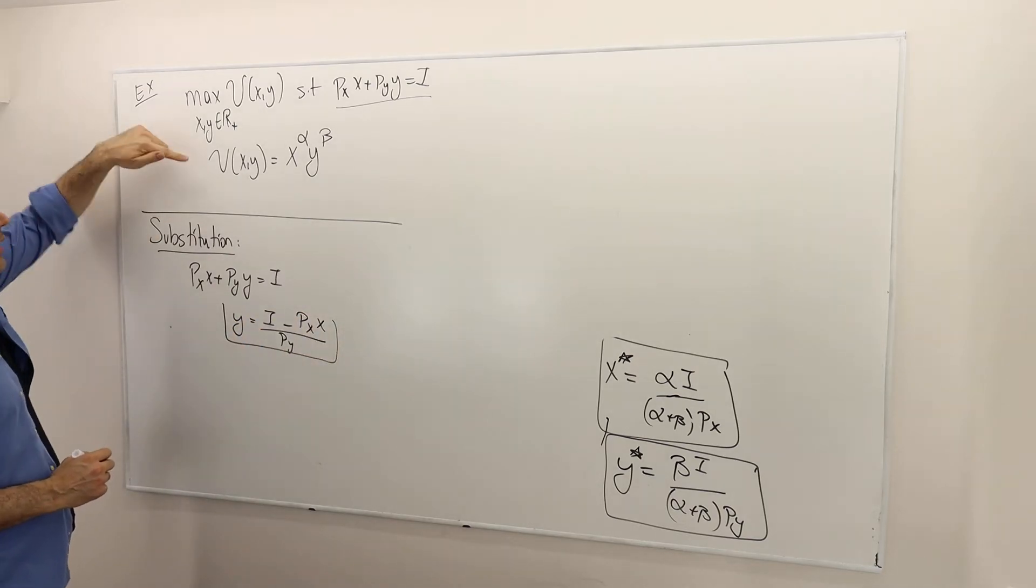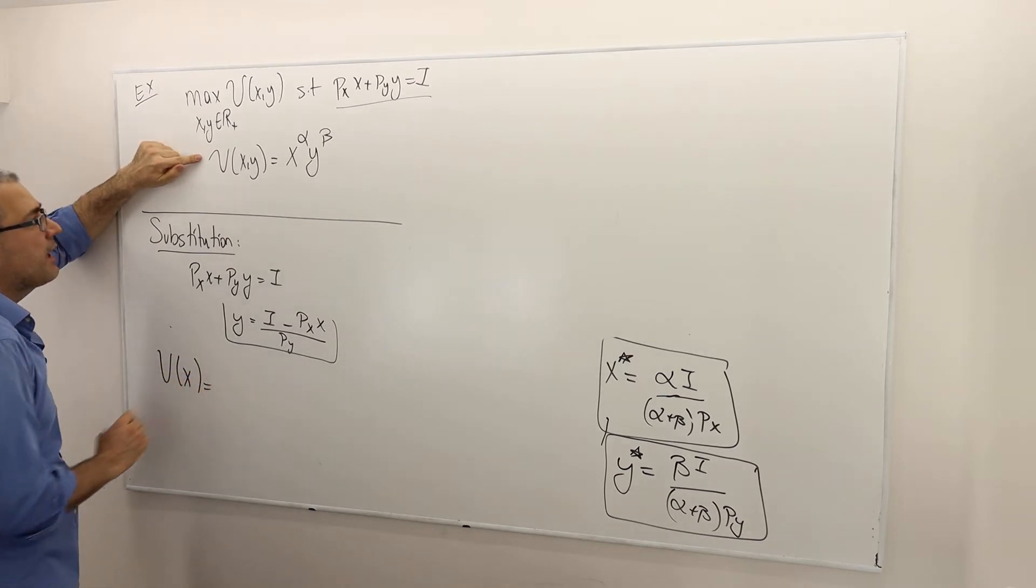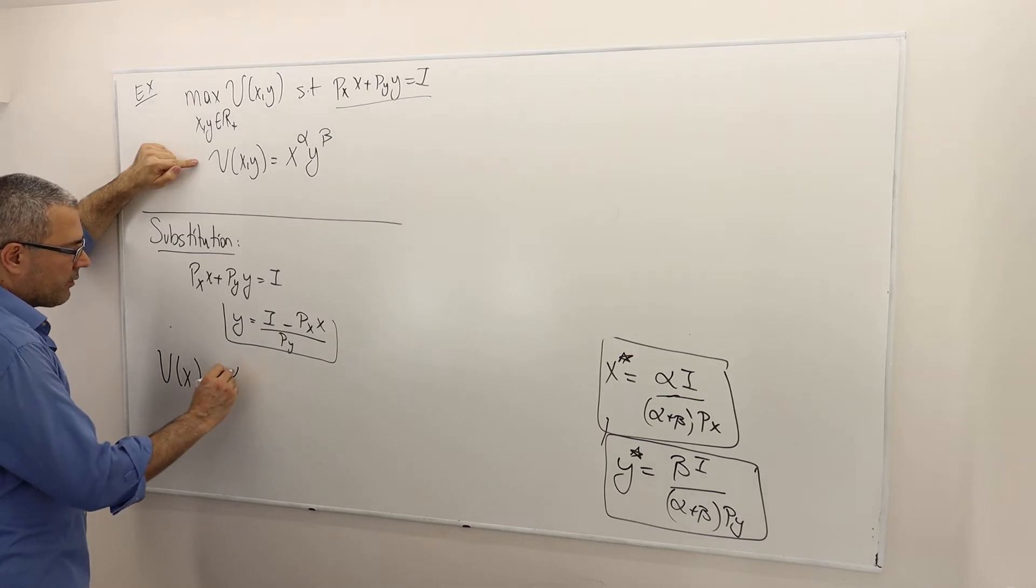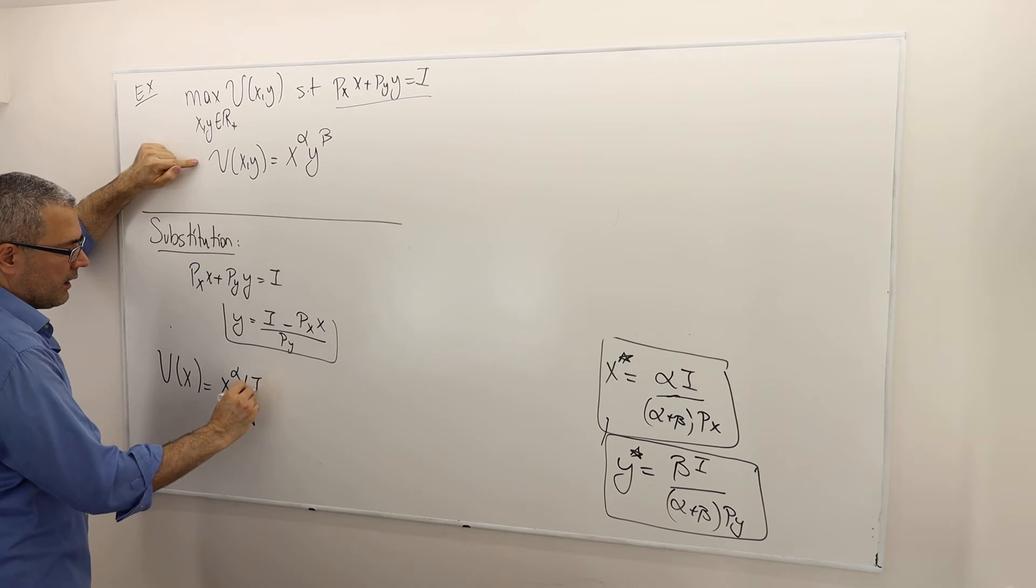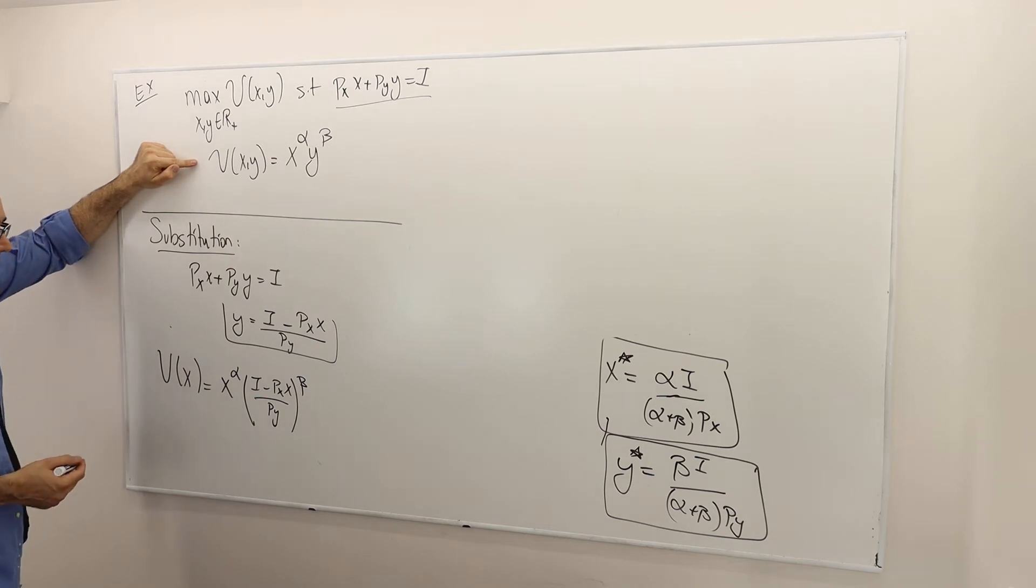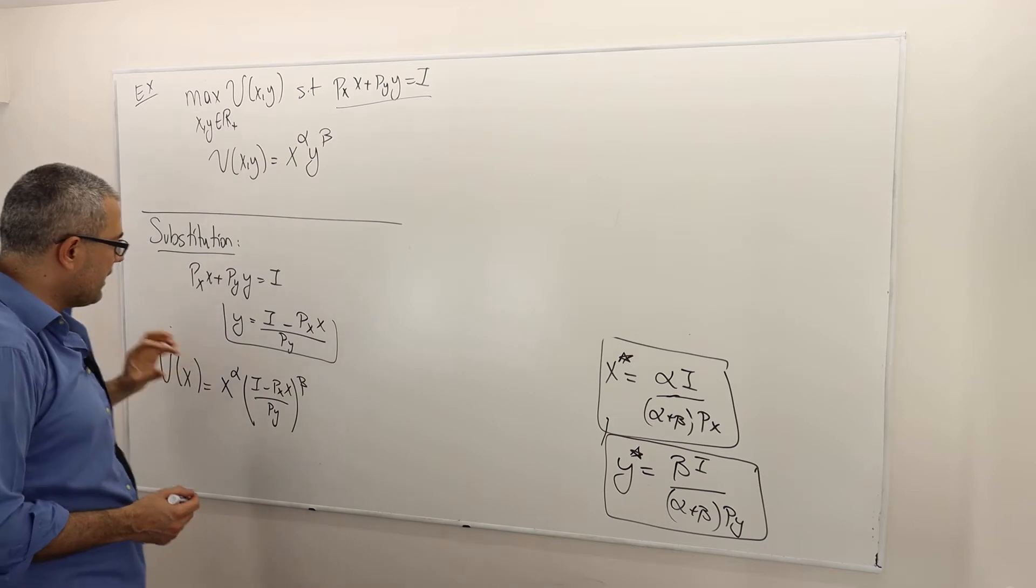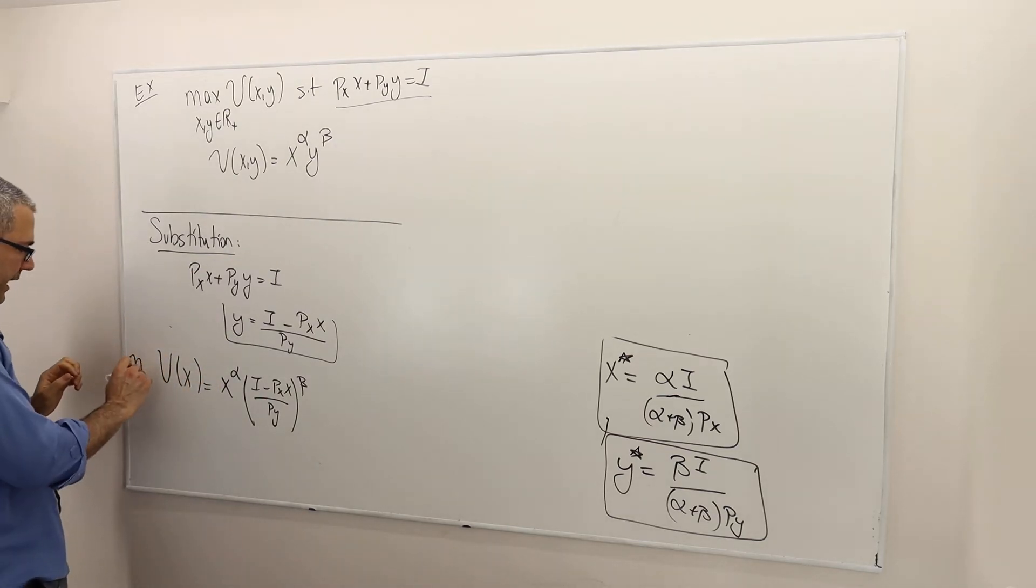Okay, then what? Plug this into my utility function. So my utility function is going to become a function of one variable only. So it is X to the power alpha. And whenever I see Y, I'm going to plug this. So it's I minus PXX divided by PY to the power beta.